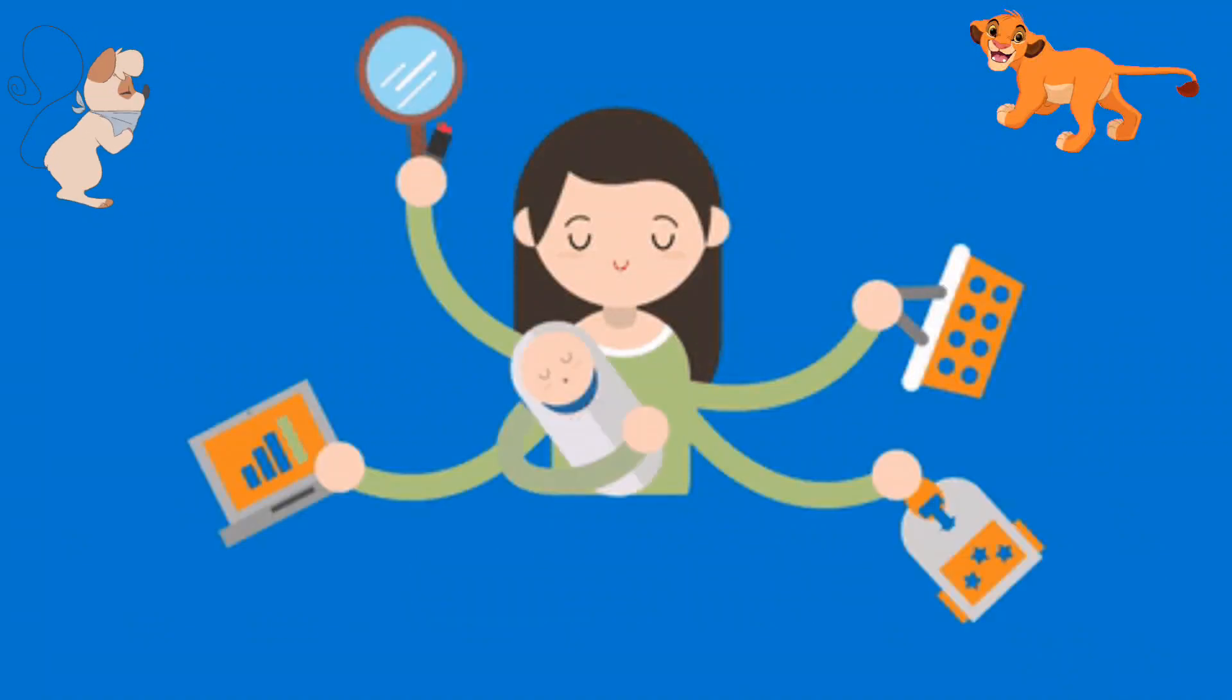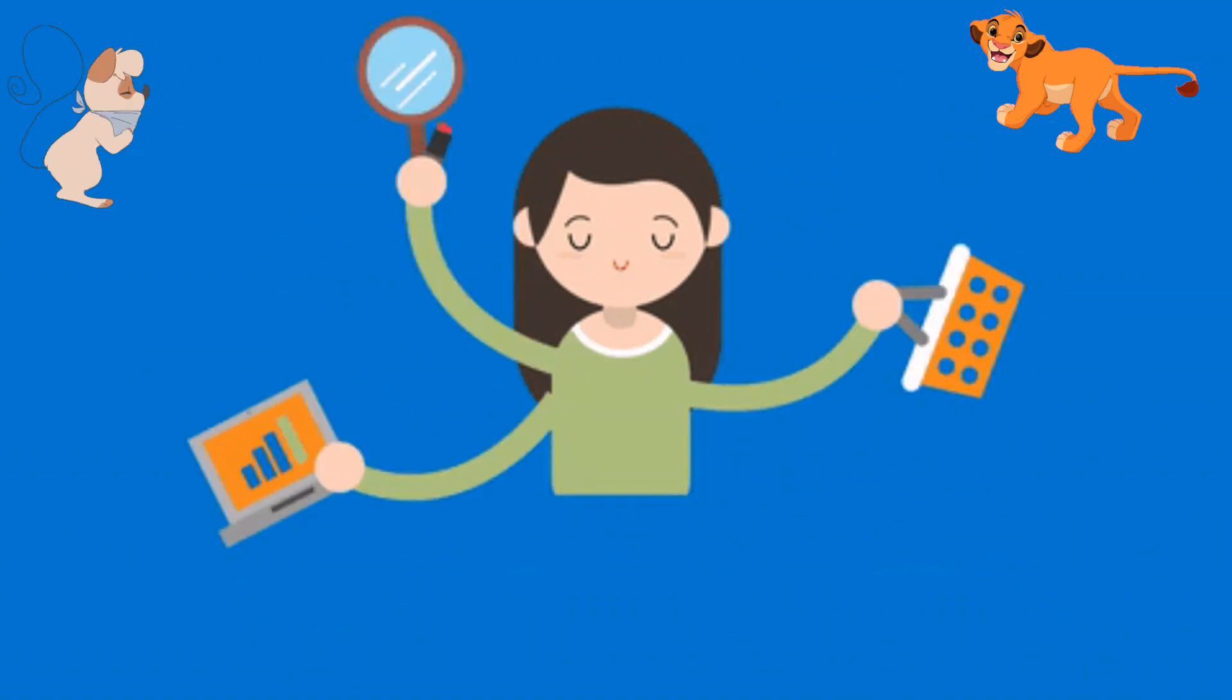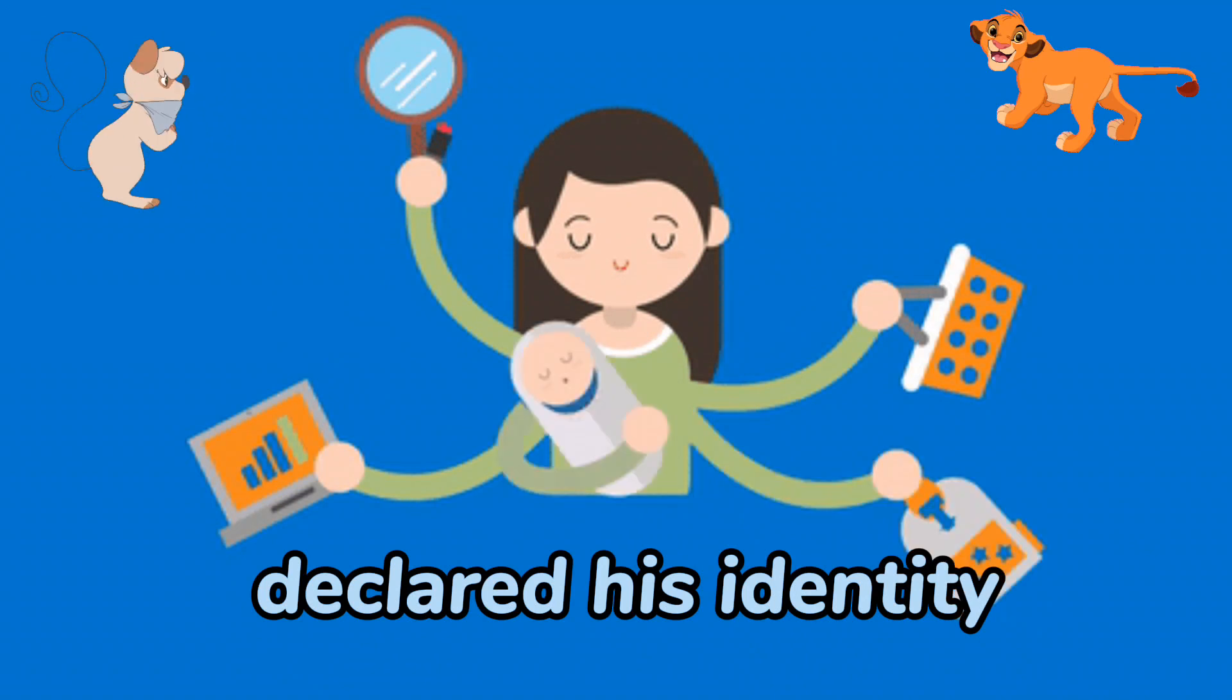Dictation 27. The frightened mouse declared his identity